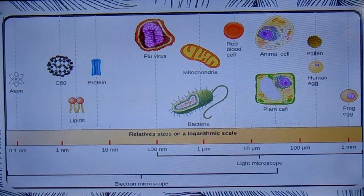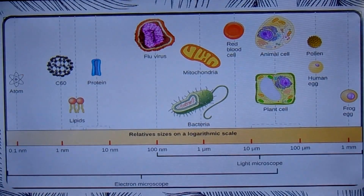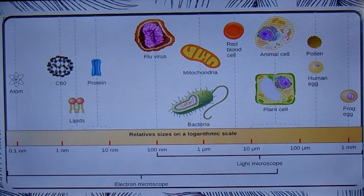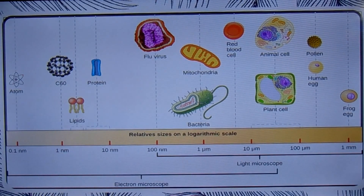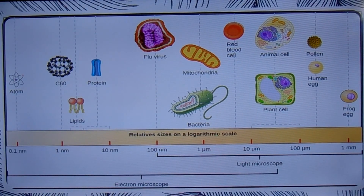In fact, cells can be widely different. Biologists estimate that there may be up to 100 million distinct species of living organisms on our planet. Cells vary enormously in appearance and function.